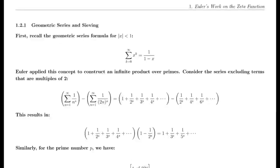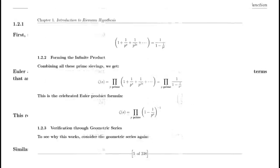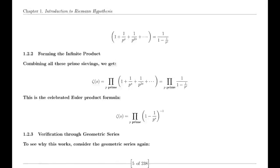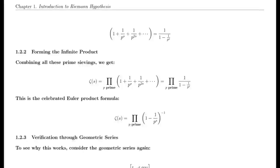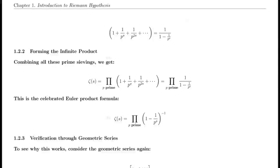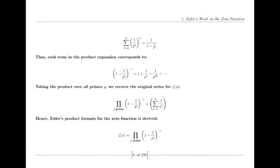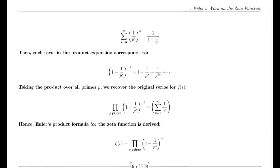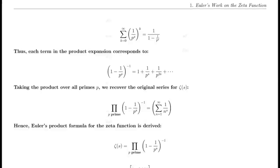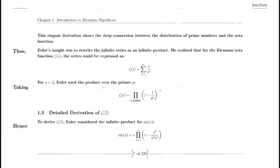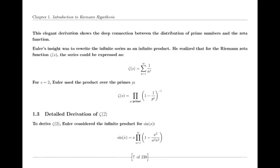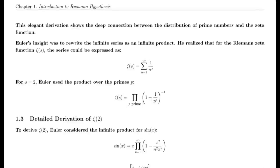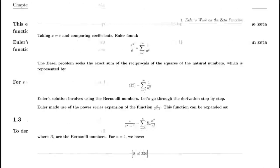Riemann also made use of the Jacobi theta function, which has significant applications in various areas of mathematics. The theta function's series representation and modular properties were instrumental in Riemann's derivation of the functional equation for the zeta function. This equation is crucial for understanding the zeta function's behavior across the complex plane and highlights its intricate connections to other mathematical functions.